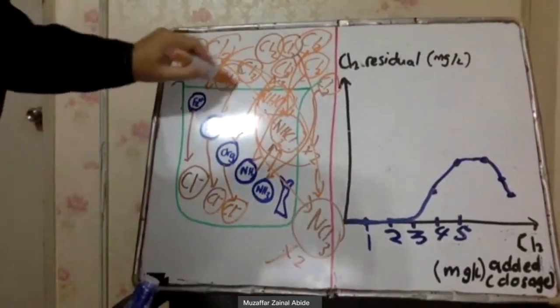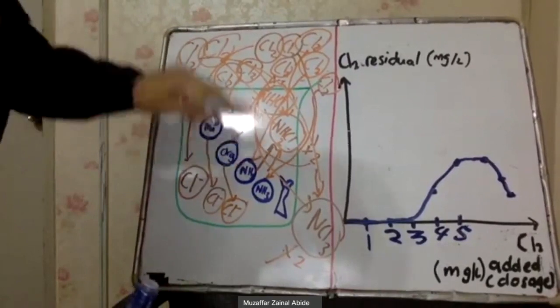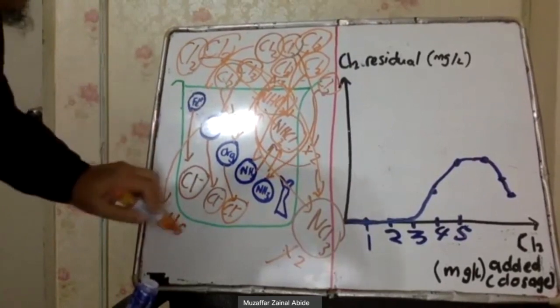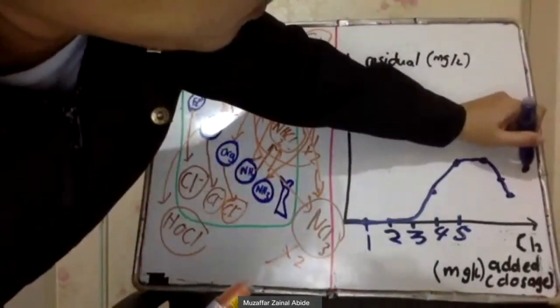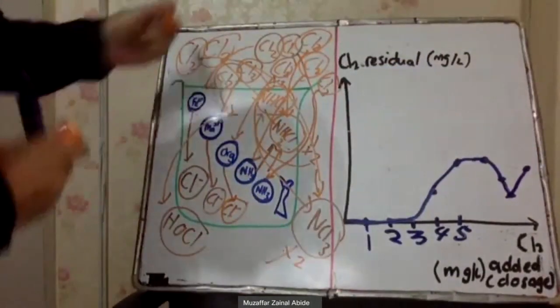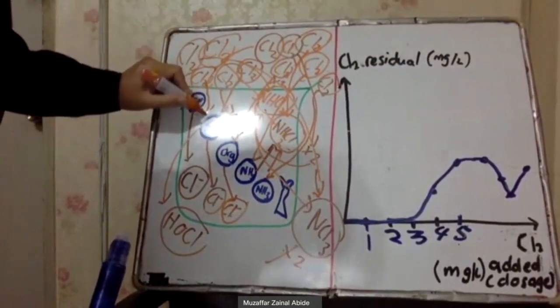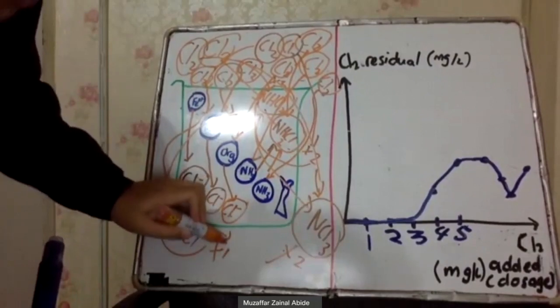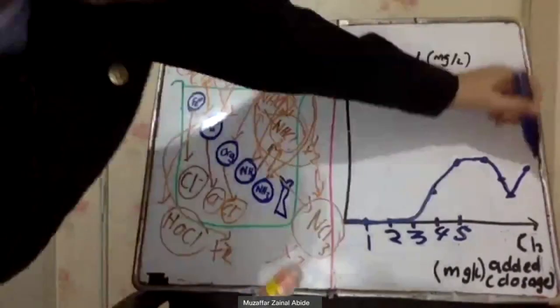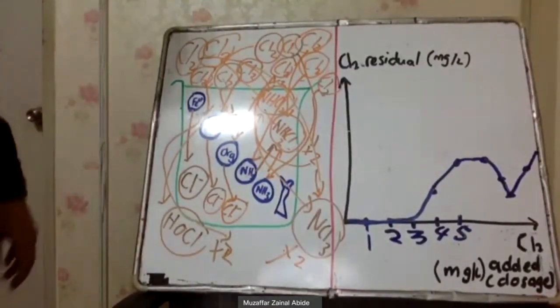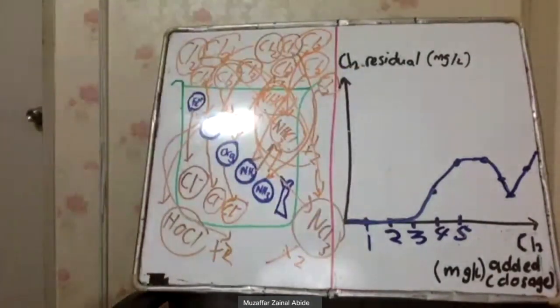Finally, if we add subsequent chlorine doses, the chlorine is no longer reacting with any of those compounds. Instead it produces HOCl (hypochlorous acid) — free chlorine — in the water. You then see the chlorine residual increasing again. Adding more chlorine keeps producing more HOCl, so the residual continues to rise.